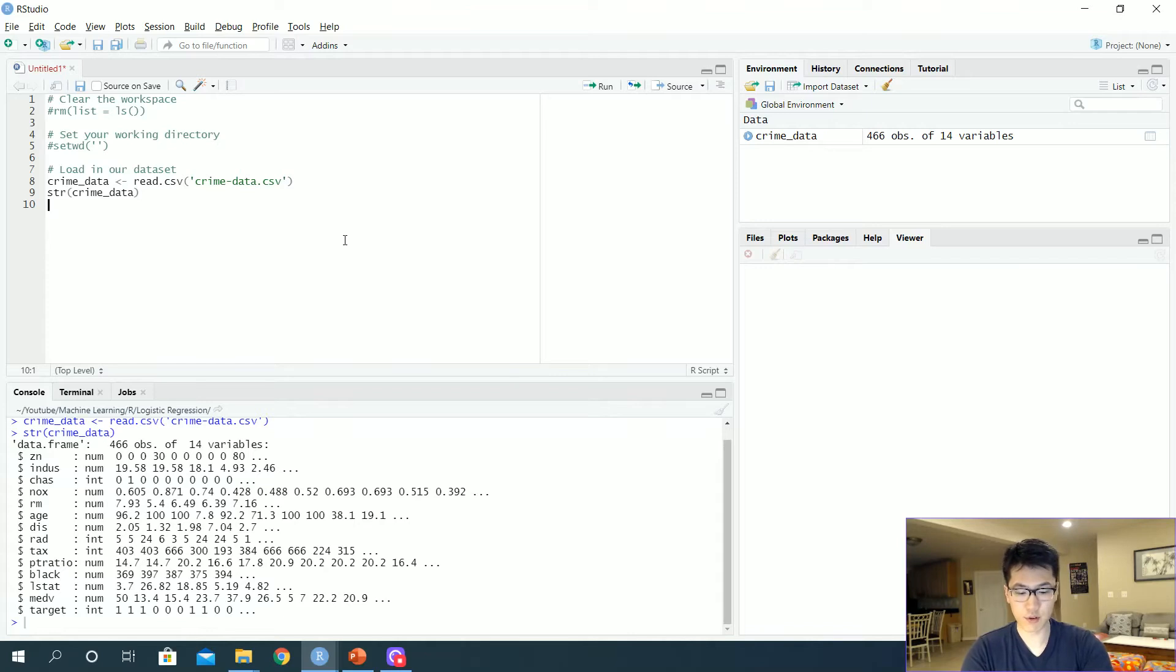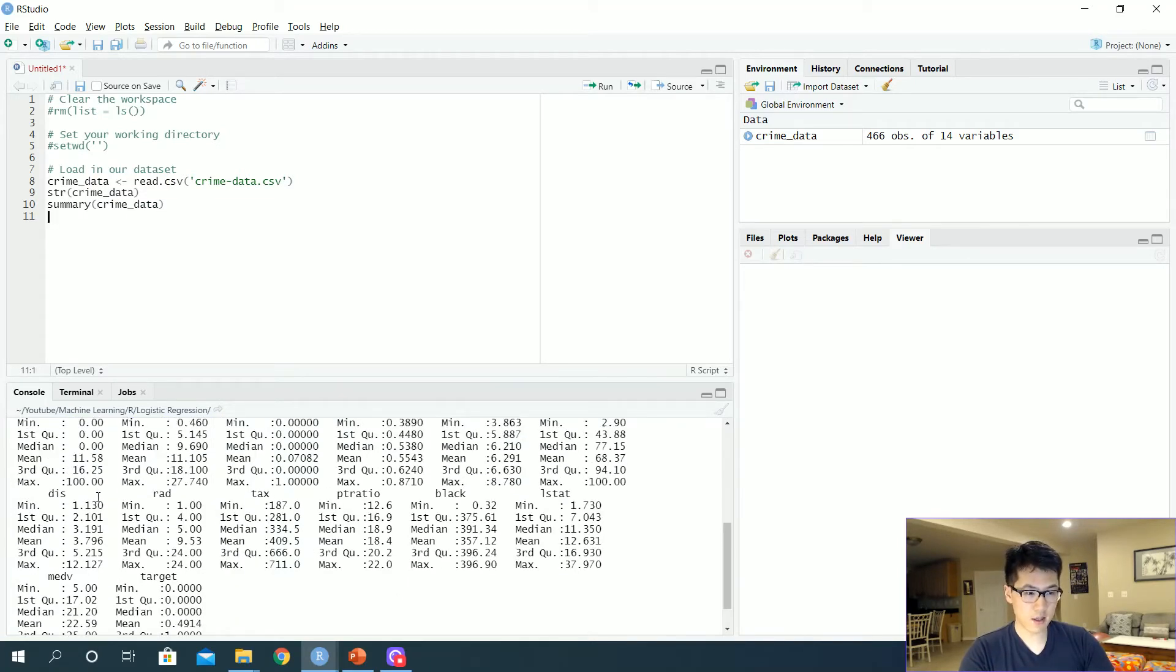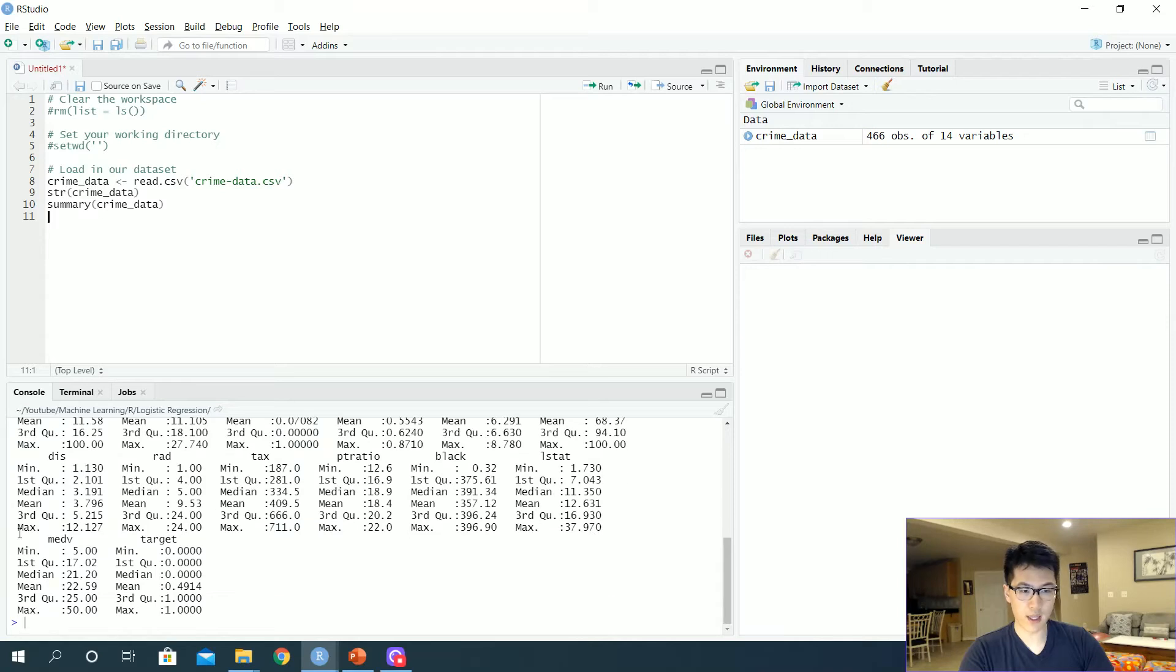After we took a brief look at the structure of the crime data, we want to look at the summary of the crime data just to get a general sense if there's any NAs. It looks like there are no NA variables or rows or observations, and that's generally what you would want to see.